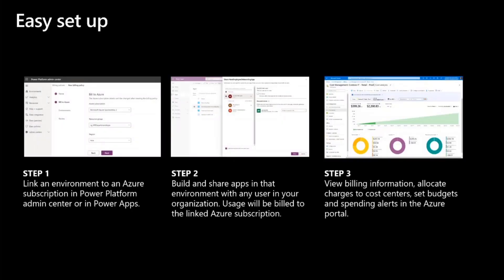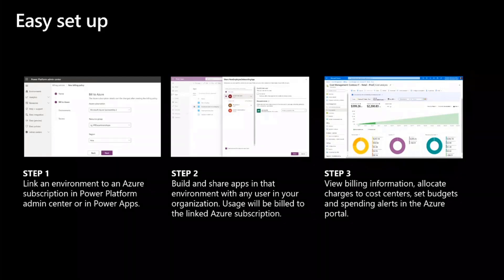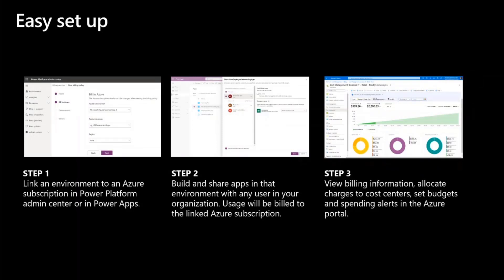Now to understand how to set up pay-as-you-go: it's super simple, there's no multi-day or multi-step process. Anyone with the right permission — an environment admin, Power Platform admin, or global admin — can set it up. All you need is an active Azure subscription. You link that Azure subscription to a Power Platform environment, either in the Power Platform Admin Center or directly within Power Apps for the specific app you want. As soon as you connect an Azure subscription to a Power Platform environment, that environment becomes a pay-as-you-go environment and all apps within it are charged against the Azure subscription.